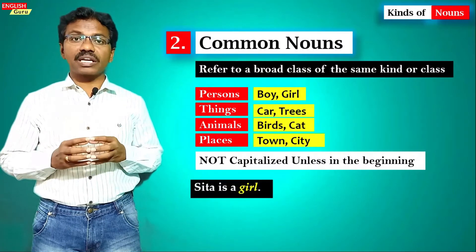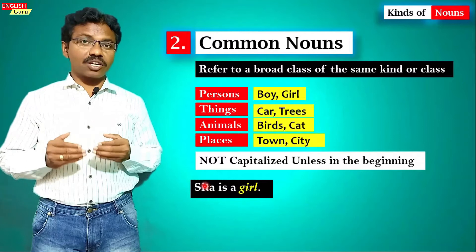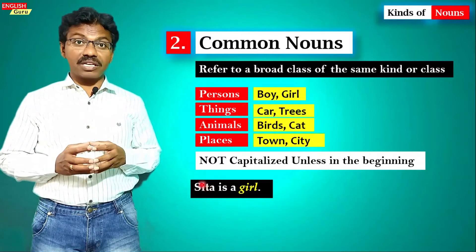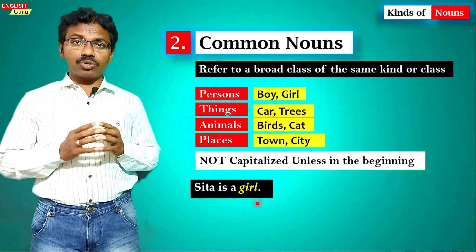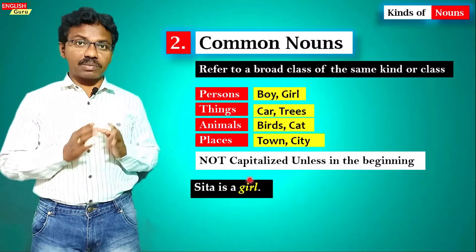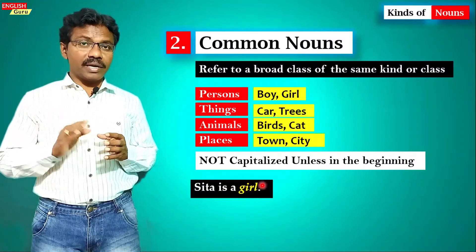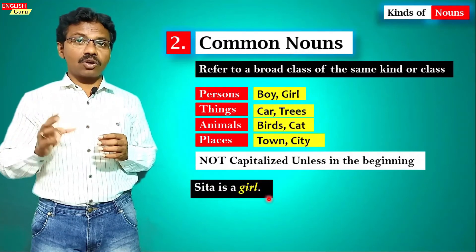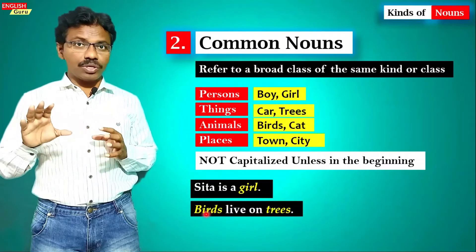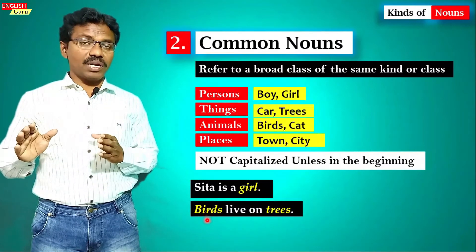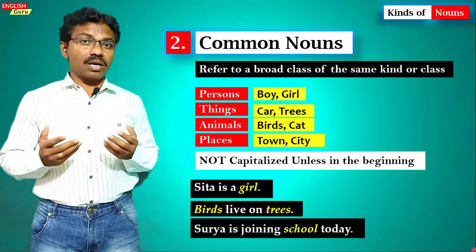For example, 'Sita is a girl.' The word 'girl' is a common noun, whereas 'Sita' is a proper noun. Sita is a name given to only one individual girl, so it is a proper noun. Whereas we can call any girl simply 'a girl,' so 'girl' is a common noun that applies to Sita, Gita, and everybody.